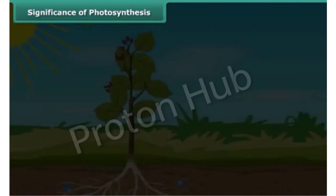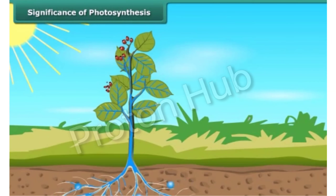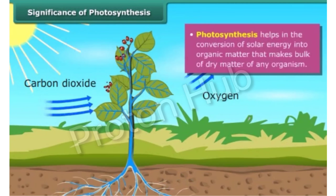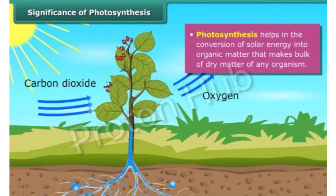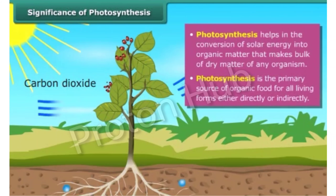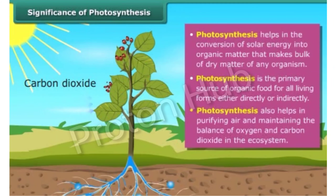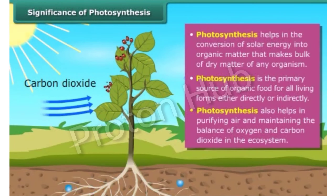Photosynthesis is an important and vital process for life on this planet. This process helps in the conversion of solar energy into organic matter, and hence photosynthesis links the physical and biological world. It is the primary source of organic food for all living forms, either directly or indirectly, and also helps in purifying air and maintaining the balance of oxygen and carbon dioxide in the ecosystem.